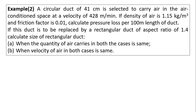In the second numerical we consider the opposite case: the dimension of a circular duct is given and we have to replace it with a rectangular duct. A circular duct of 41 cm diameter carries air at a velocity of 428 m/min. If density of air is 1.15 kg/m³ and friction factor is 0.01, calculate pressure loss per 100 m length. If this duct is replaced by a rectangular duct of aspect ratio 1.4, calculate the size of rectangular duct for both criteria.